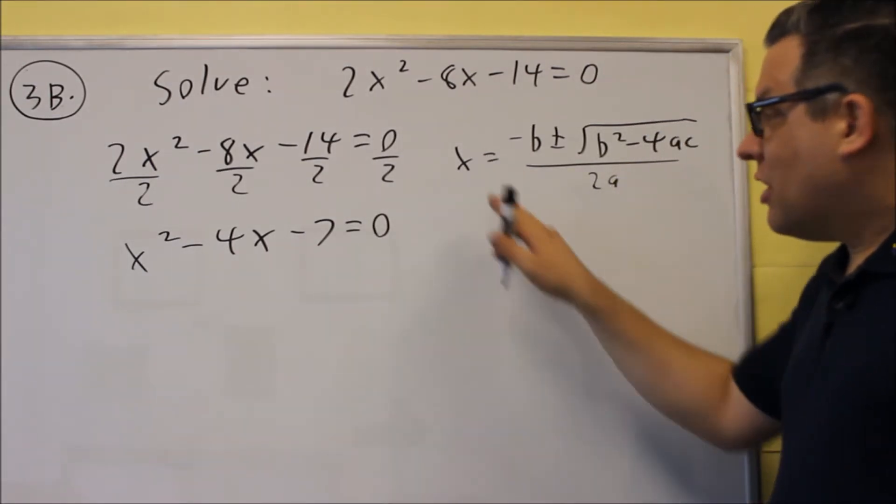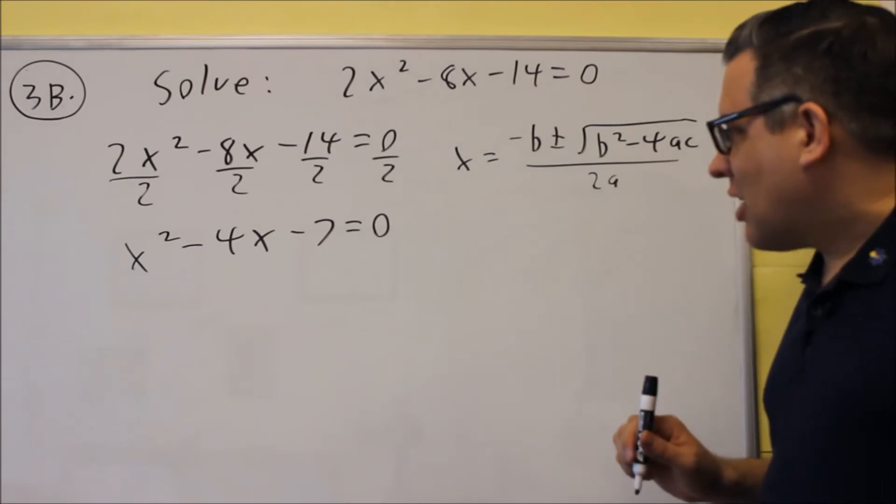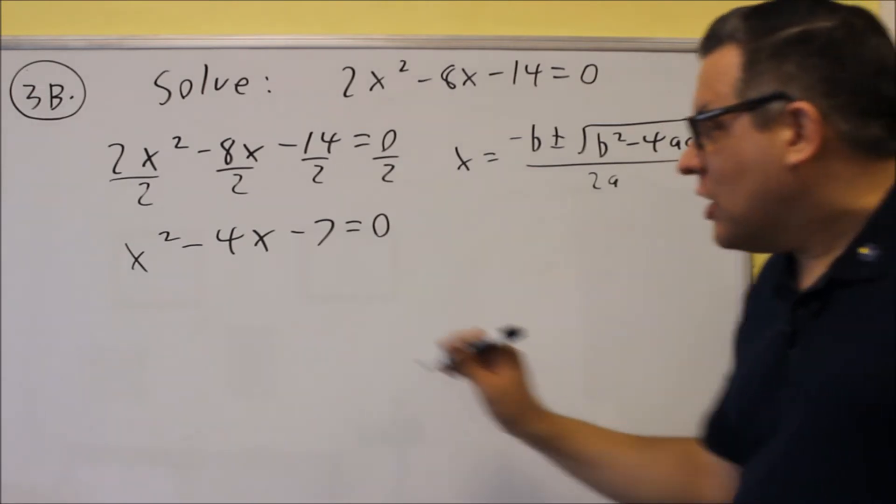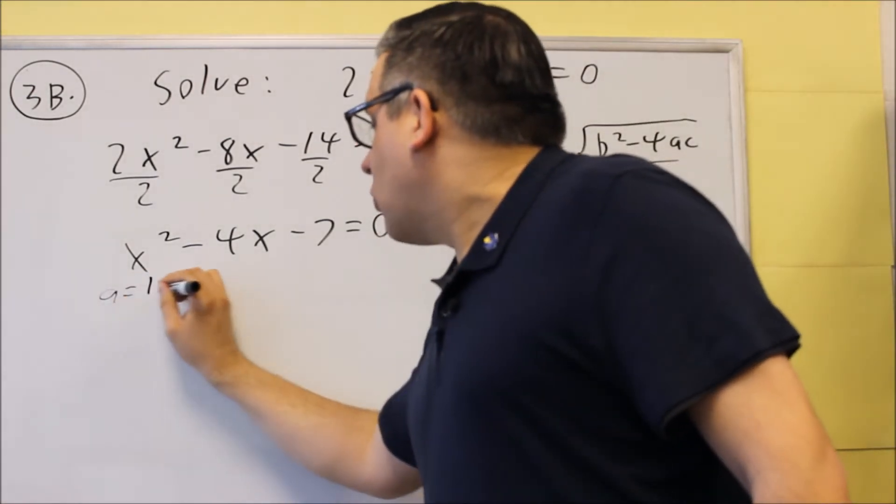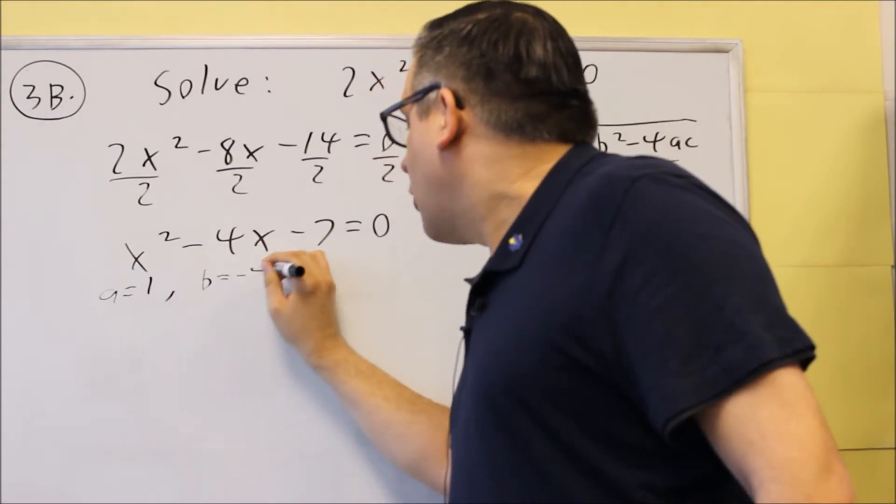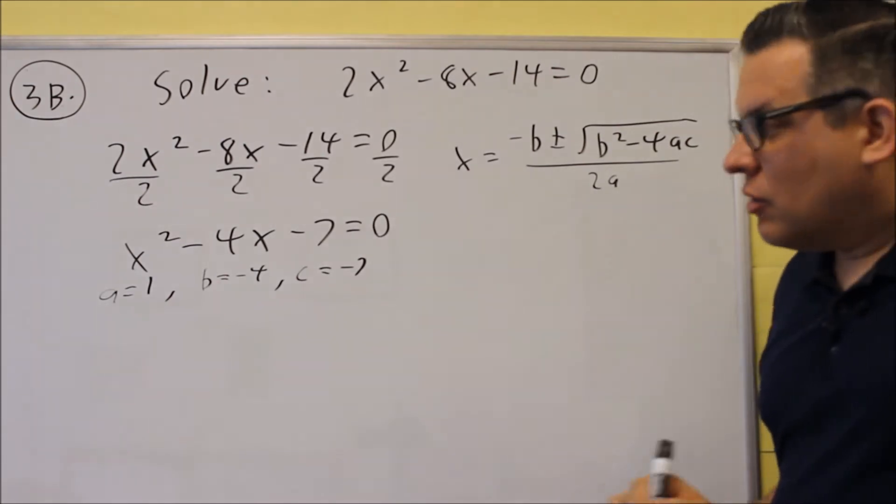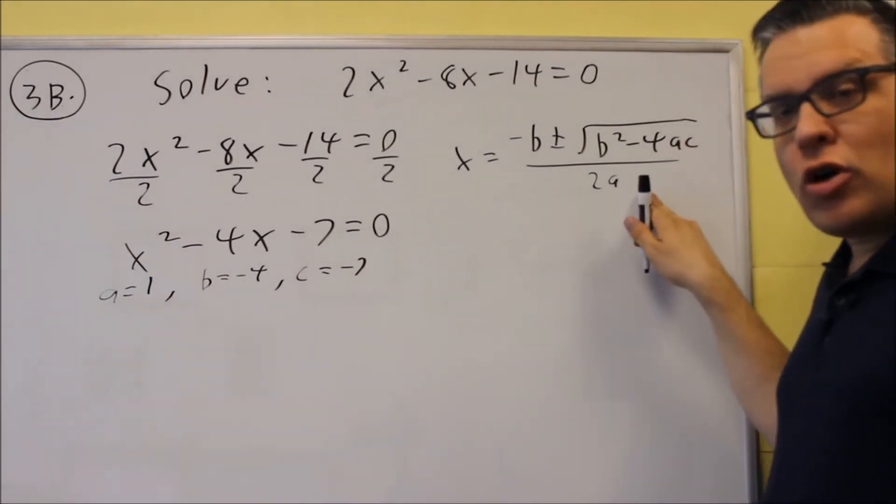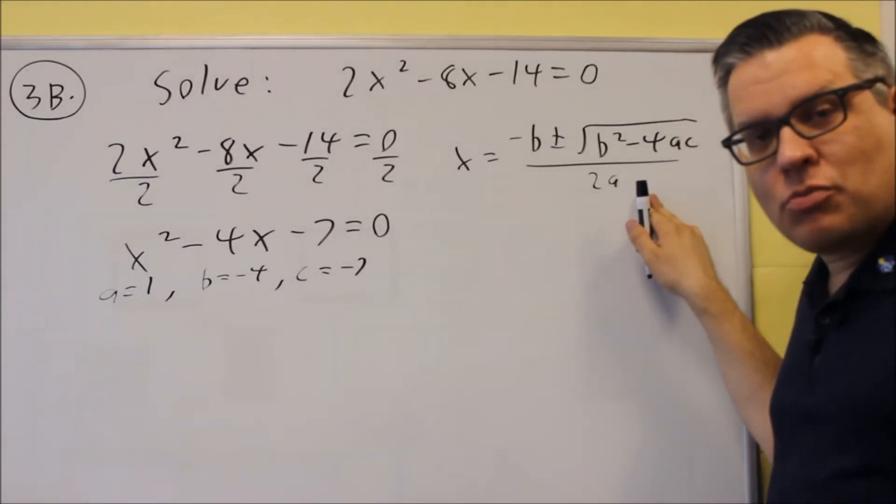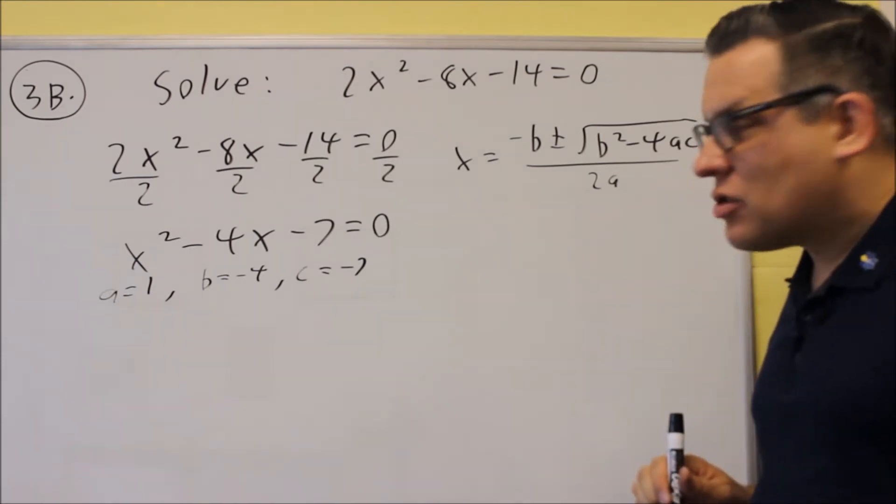This will give you the answers for x. In this case, we have to identify what the a, b, and c are. So in this case, a is 1, b is negative 4, and c is equal to negative 7. We want to put these numbers into the quadratic formula and simplify it down as much as possible. That's going to give us our answers.